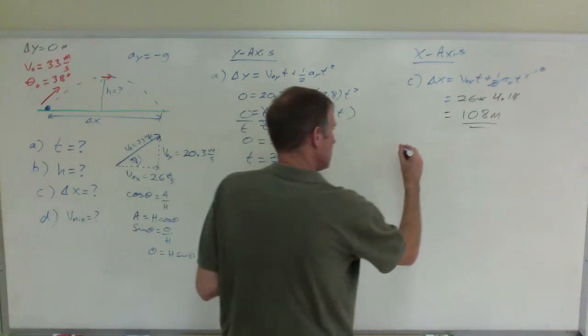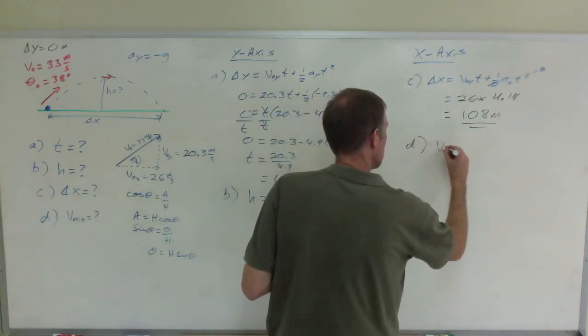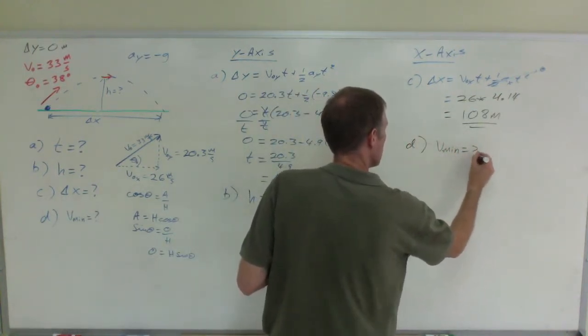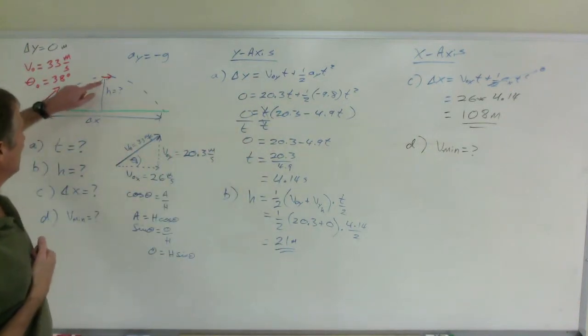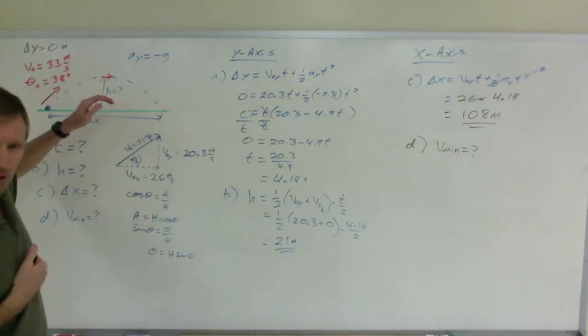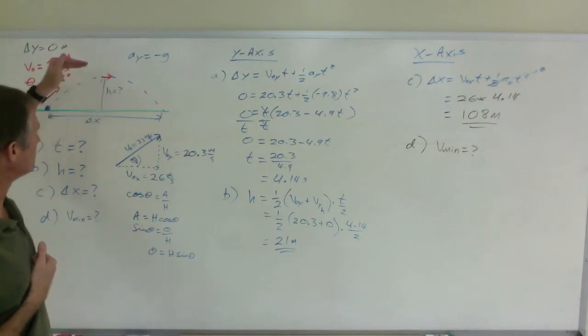And then the last part, D, its minimum speed. And this is really just to make a conceptual point. It's always traveling slowest at its highest point. But it hasn't stopped moving. It's only stopped rising.